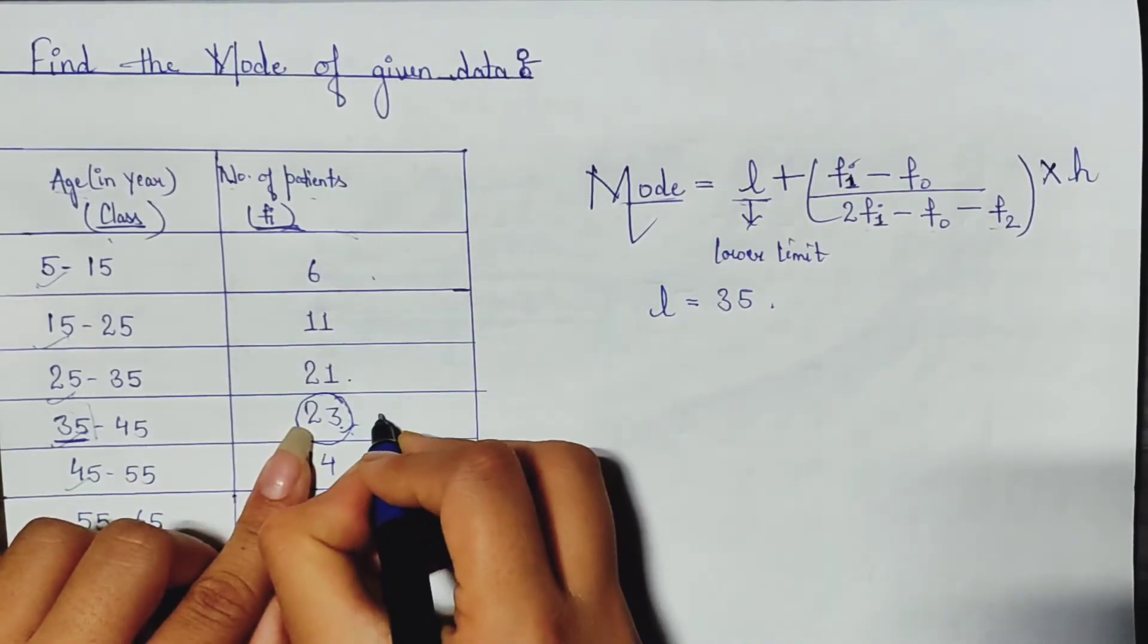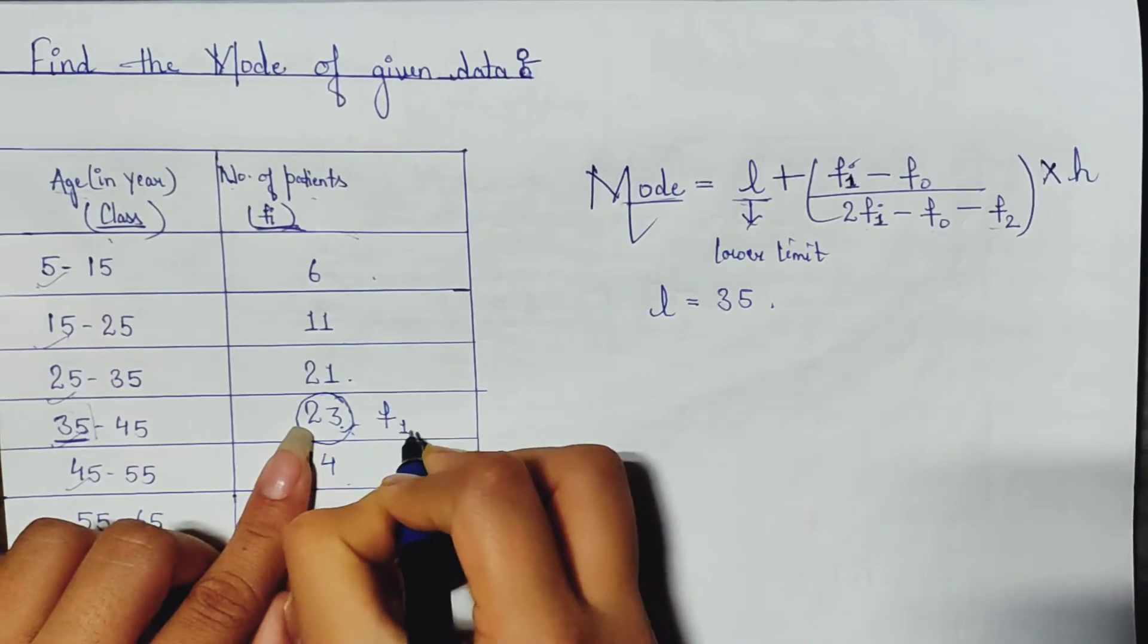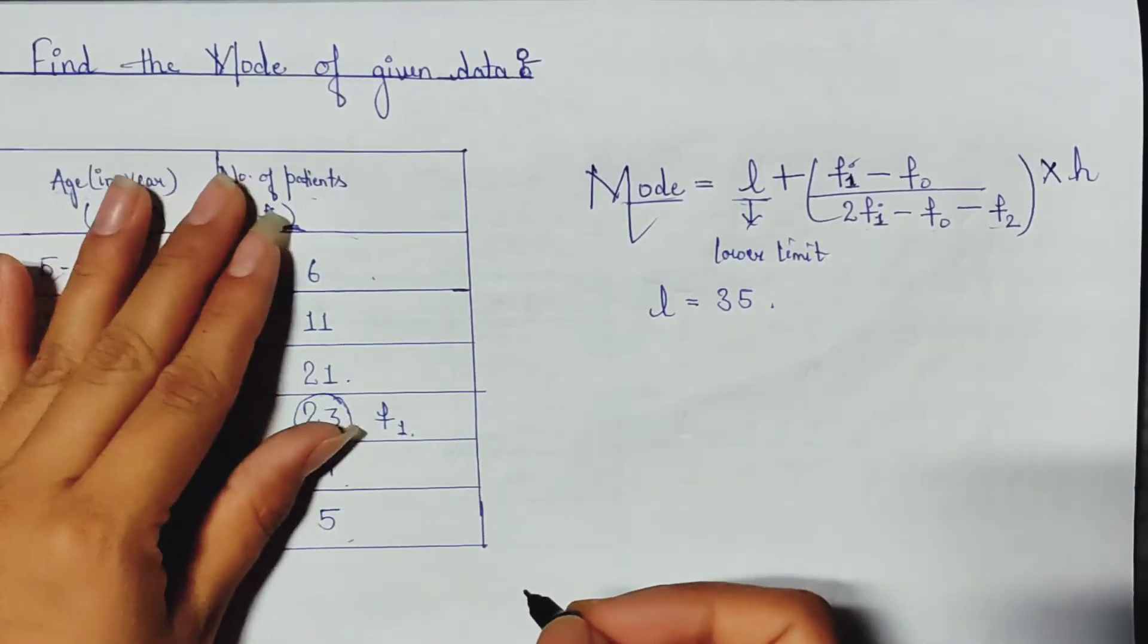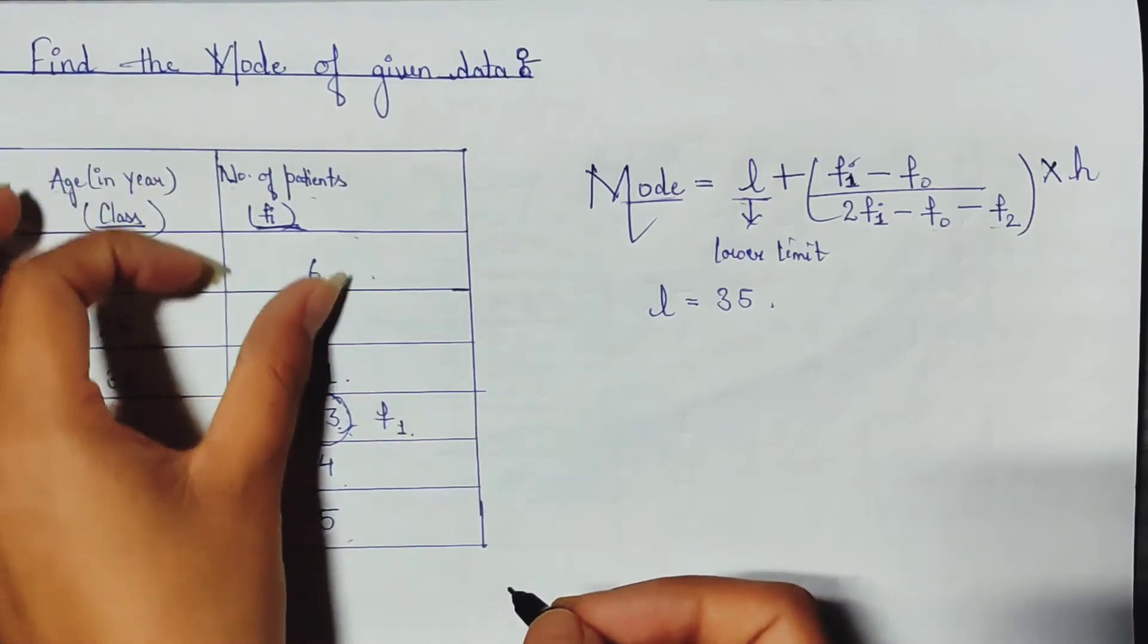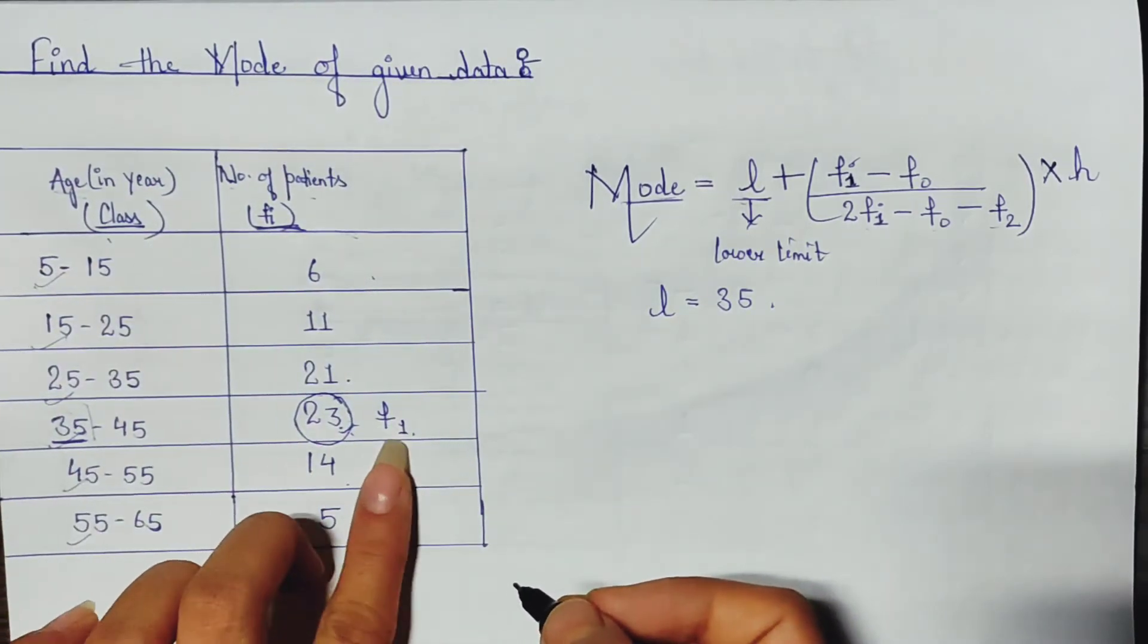So the value of L is 35. This highest frequency is nothing but f1. Always remember, the highest value which is given in this question is 23, and that is f1.